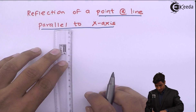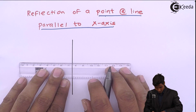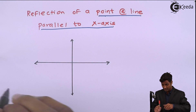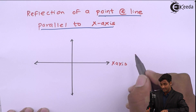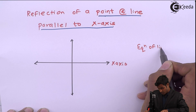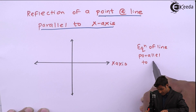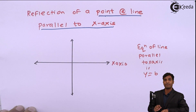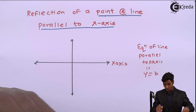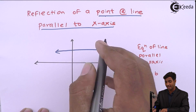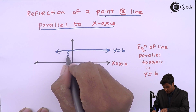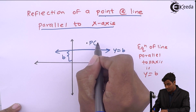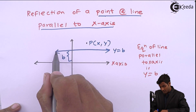First of all, I will draw. This is the x-axis and the equation of a line parallel to x-axis is y equal to b, which means that it will have some y-coordinate. I will draw this line as y equal to b because it will have some y-coordinate that is b. This is point P, I will name it as P(x, y), which is to be reflected about this line.